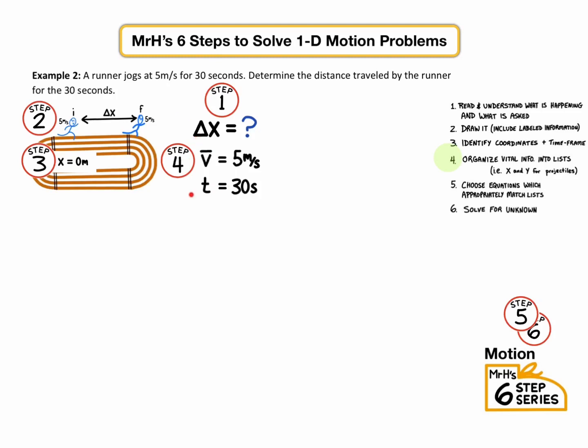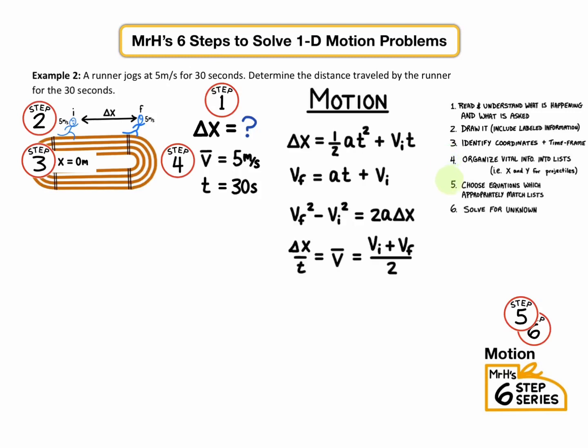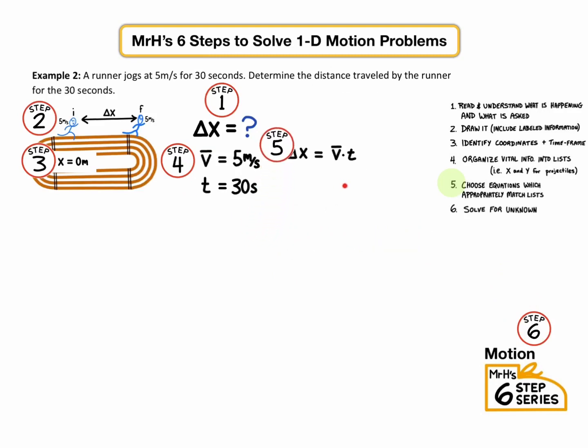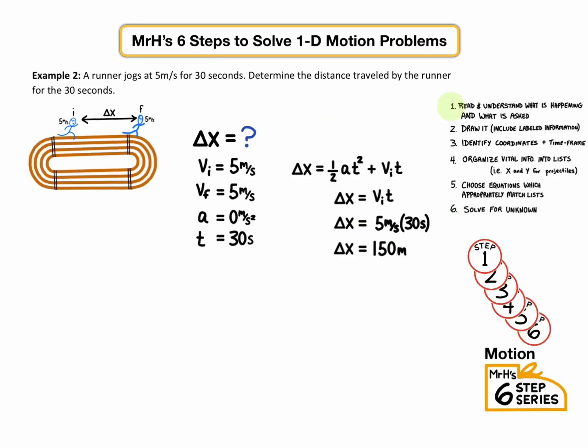So with those three things, let's take a look at our equation sheet. And we're going to pick this equation that matches our list. And then we can plug in our solutions and solve. We've got 150 meters of displacement. And the other option looks like this. If you wanted to choose to write vi and vf both equal to five, you would have had to write acceleration equals zero. You would have picked this formula here, but the acceleration term would cancel out and you'd be left with pretty much the same variables. And you still get 150 meters.